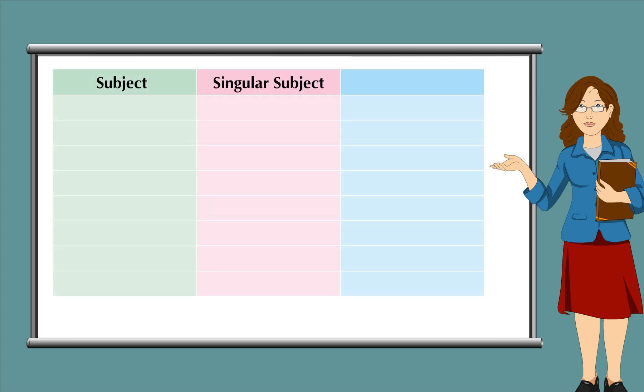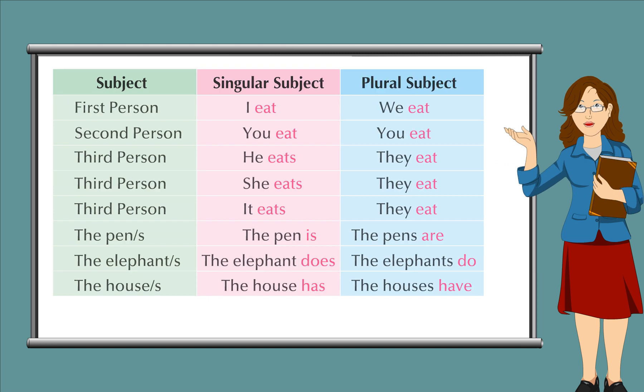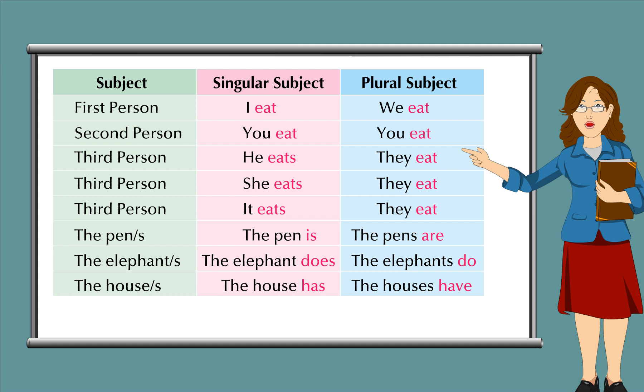Subject: singular subject, plural subject. First person: I eat, we eat. Second person: you eat. Third person: he eats, they eat. She eats, they eat. It eats, they eat.